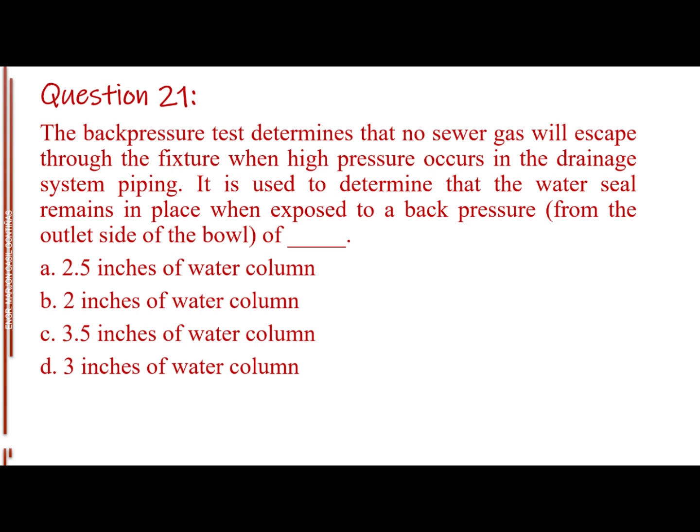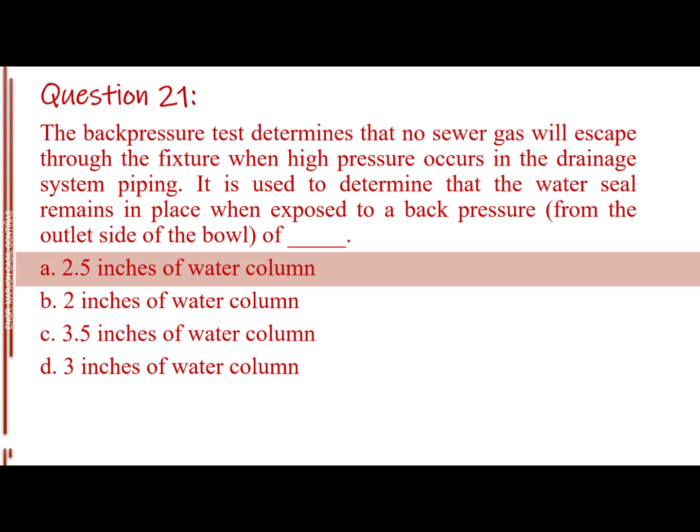Question number 21. The back pressure test determines that no sewer gas will escape through the fixture when high pressure occurs in the drainage system piping. It is used to determine that the water seal remains in place when exposed to a back pressure from the outlet side of the bowl of blank. Letter A, 2.5 inches of water column. Letter B, 2 inches of water column. Letter C, 3.5 inches of water column. Letter D, 3 inches of water column. The answer is Letter A, 2.5 inches of water column.